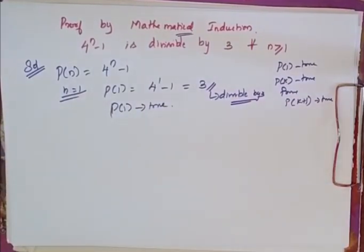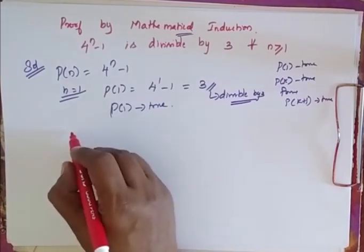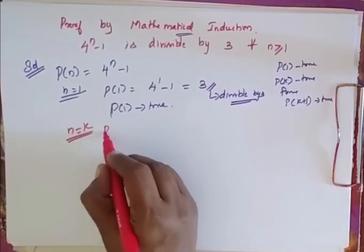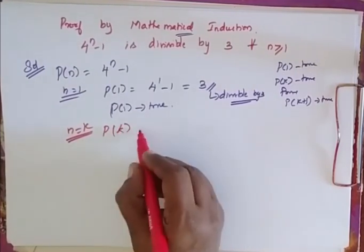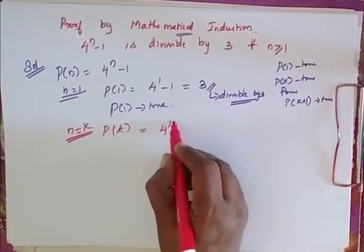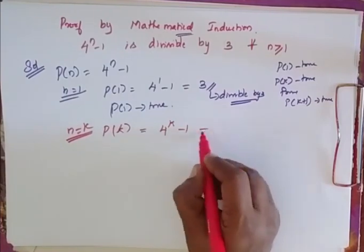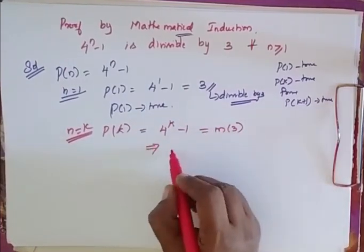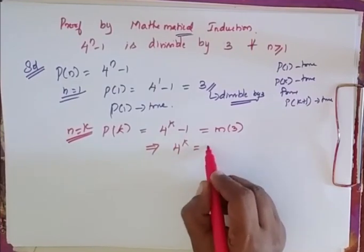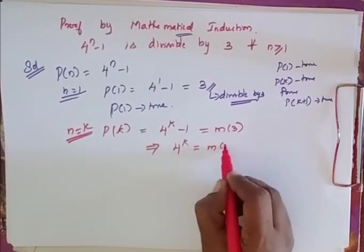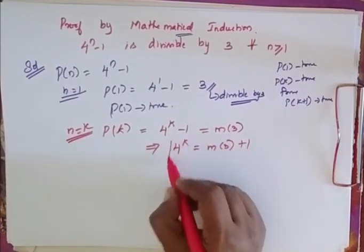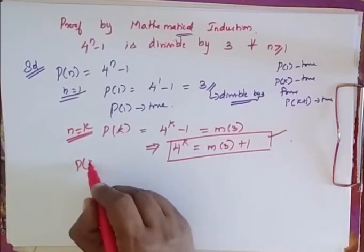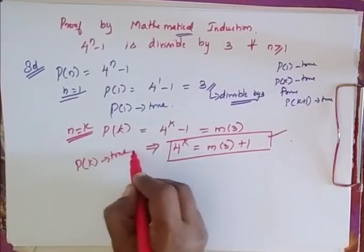Since it is true for P of 1, we assume that it is true for P of K when n is equal to K. So P of K is equal to 4 power K minus 1, which equals some multiple of 3. From this, 4 power K is equal to some multiple of 3 plus 1. Remember this — we will use it in the further proof.